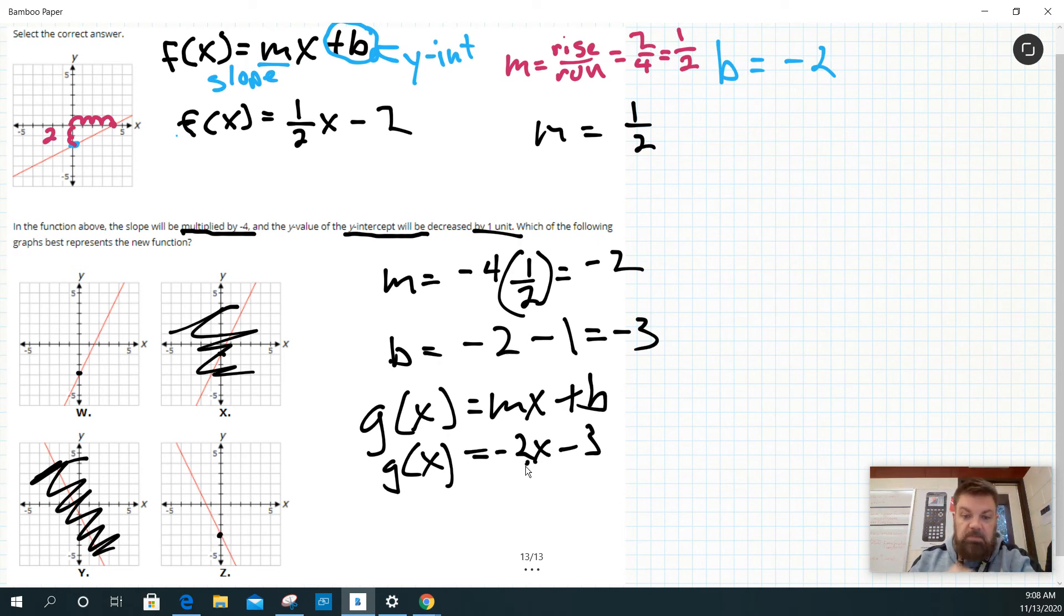Now my slope is a negative two. So that means my slope should go downhill. And it should go down two over one. So this is probably not it. But let me double check. From here, if I go down one, two over one, I'm on the line. So this is the answer.